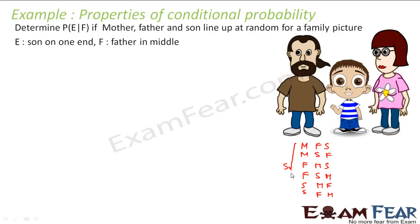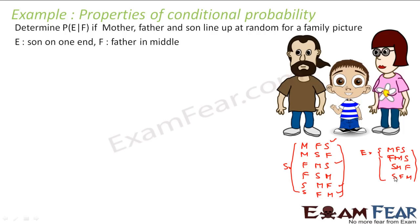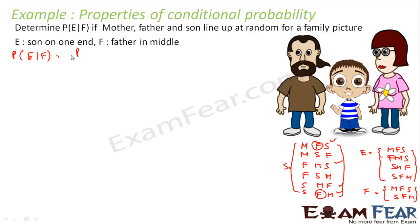The sample space has 6 arrangements. E is 'son on the end': MFS, FMS, SMF, SFM — four elements. F is 'father in the middle': only MFS and SFM — two elements. Now using the formula P(E|F) = P(E intersection F) / P(F).